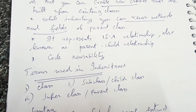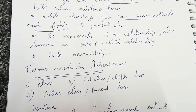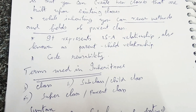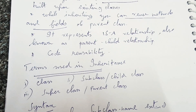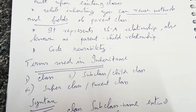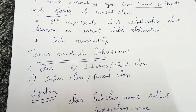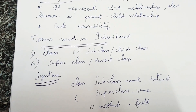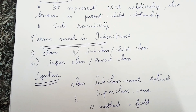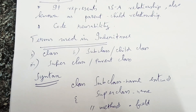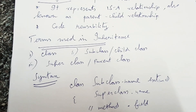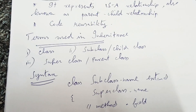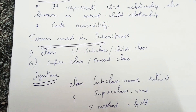Inheritance also represents an 'is-a' relationship, also known as a parent-child relationship. Whenever we use fields and methods from a parent class in a child class, we call it an 'is-a' relationship or parent-child relationship. The terminologies used in inheritance are: subclass or child class, and superclass or parent class. The parent class is called either superclass or parent class, and the child class is called subclass or child class.